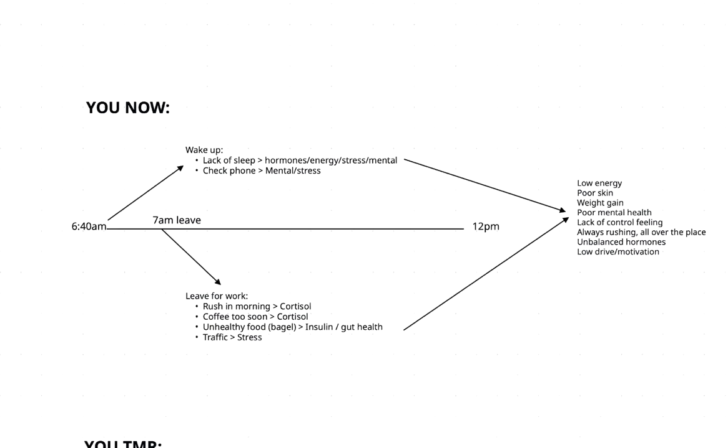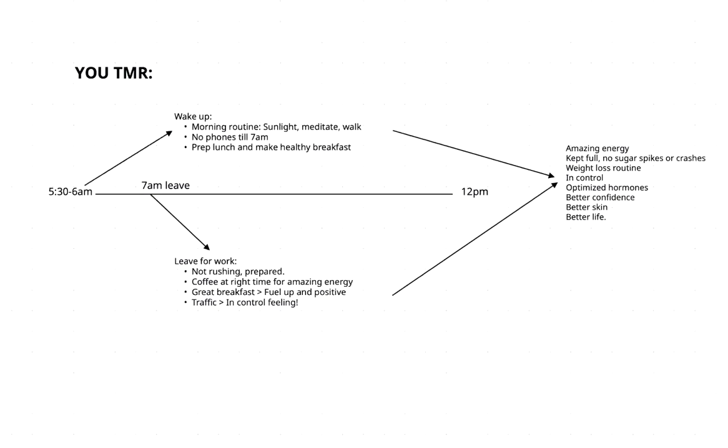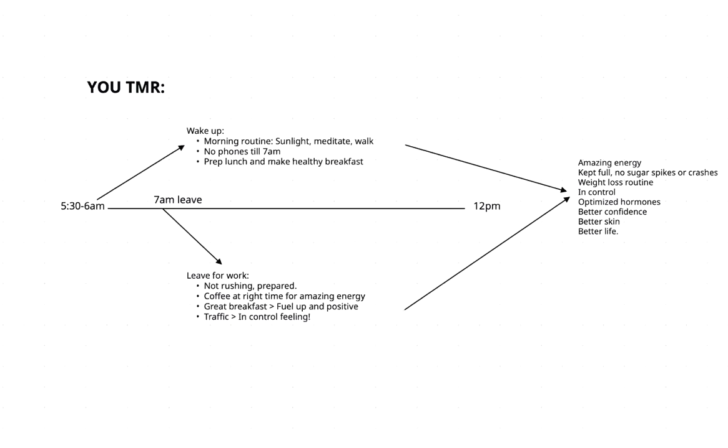So before, this routine here of doing things the old way is going to cause low energy, poor skin. This is going to cause like poor skin health and the way our skin looks, weight gain, poor mental health, lack of control feeling, always rushing all over the place feeling, unbalanced hormones and low drive, low motivation. This way by doing this and taking control of the morning, when you win the morning, you win the day. You have amazing energy, you're going to be kept full. There's not going to be any sugar spikes or crashes. You're going to have a weight loss routine and control feeling, optimized hormones, better confidence levels, better skin, just a better life overall.